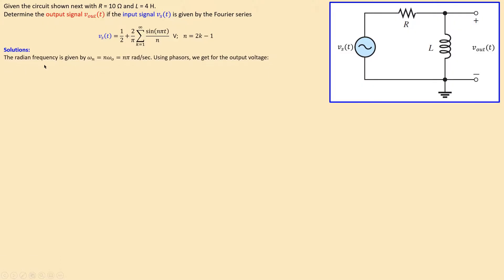Now let's look at the solution. The fundamental frequency, also called the radial frequency ω₀, is given by π in this case. The n in the harmonic expression changes based on k as we discussed. We will use circuit analysis tools — specifically phasors — to work out the output voltage expression from the input voltage and the circuit.